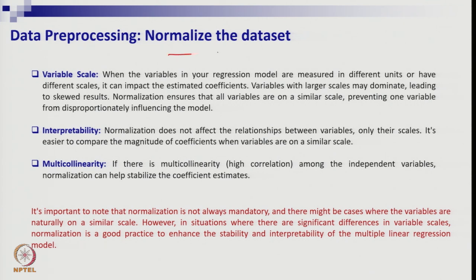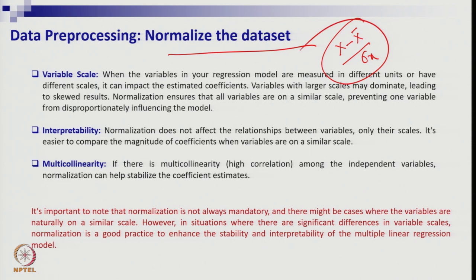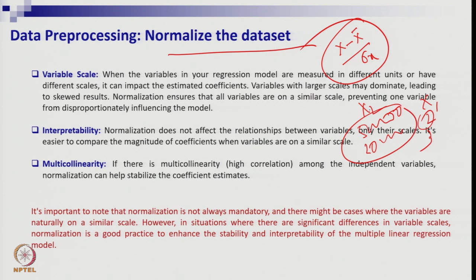To normalize the data, you can use mean normalization or standardization. After scaling all columns to normalized values and re-running the regression, this reduces the influence of variables with very high numeric scales. For instance, if one variable ranges in the thousands or lakhs while another is just 2 or 3, the high-scale variable might dominate the regression coefficients inappropriately.